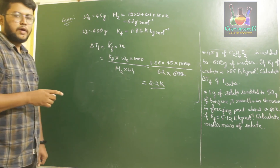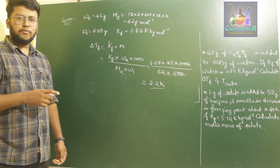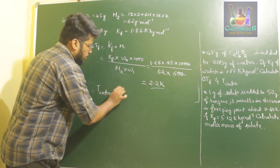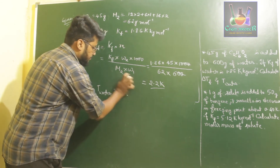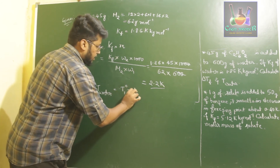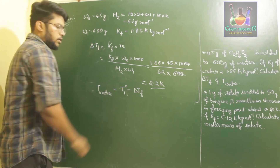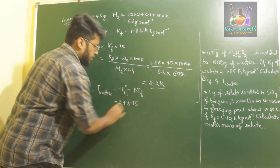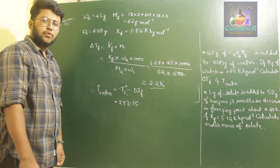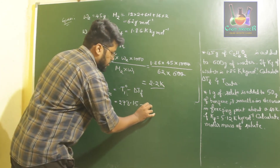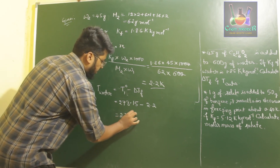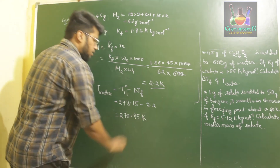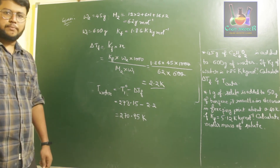Next, they have asked us to calculate the freezing point of water when the solute is added. T = T1° − ΔTf. The freezing point of pure water T1° = 273.15 K. Therefore, T = 273.15 − 2.2 = 270.95 K. So 270.95 K is the freezing point of the ethanol and water mixture solution.